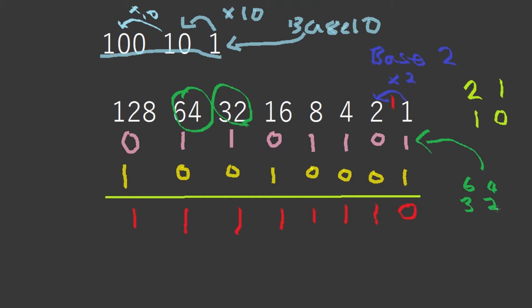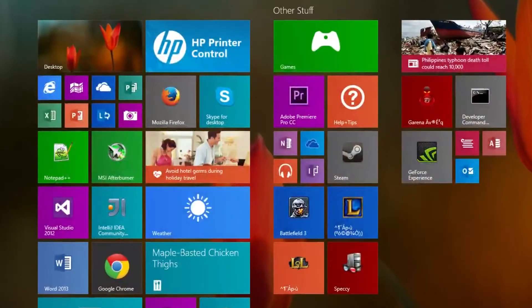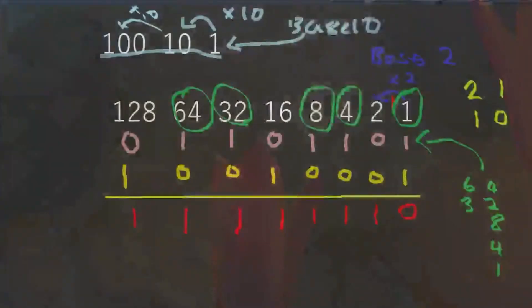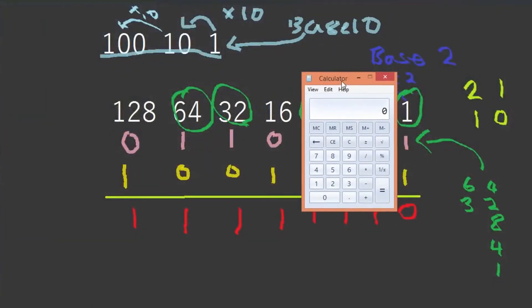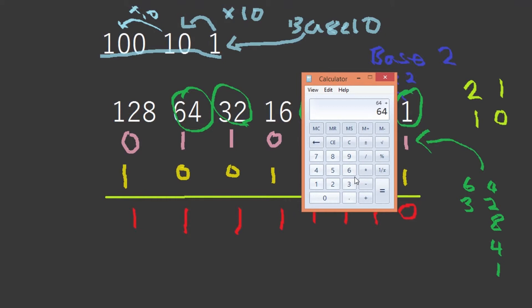We have 1 eight, and then 1 four, and then 0 twos and 1 one. So let's get our calculator out. 64 plus 32 plus 8 plus 4 plus 1 is 109. So this whole thing is 109.